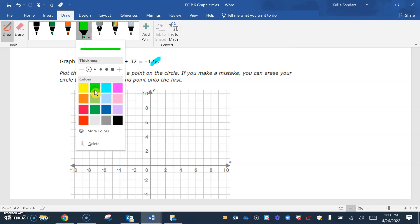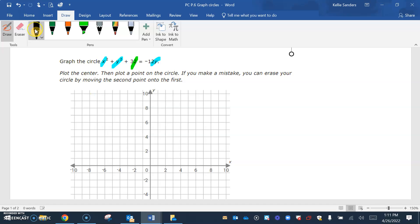There's only one x squared, and then we have a y squared plus 12y equals negative 32. So, half of 12 is 6, 6 squared is 36. Add it on both sides. 36 minus 32 is 4.